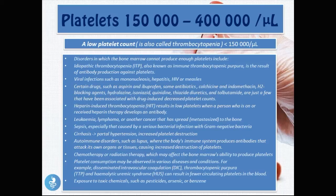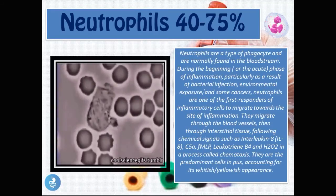Platelet consumption may be observed in conditions such as disseminated intravascular coagulation (DIC), thrombocytopenic purpura, and hemolytic uremic syndrome, resulting in fewer circulating platelets. A low platelet count can also be caused by exposure to toxic chemicals such as pesticides, arsenic, or benzene. These are all causes of thrombocytopenia.